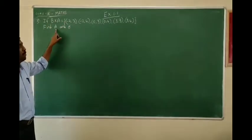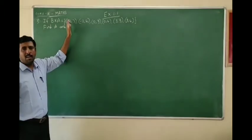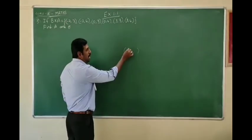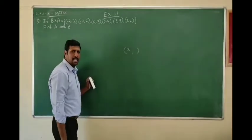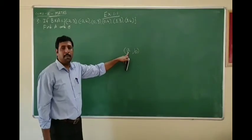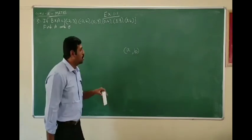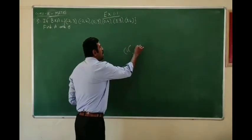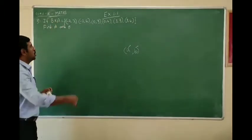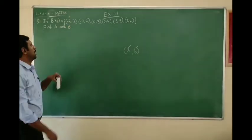We want to find out what is set A and what is set B. We know that when entering the ordered pair form, the first element belongs to the first set and the second element belongs to the second set. Here, the given term is B cross A, so the first element belongs to B and the second element belongs to A.